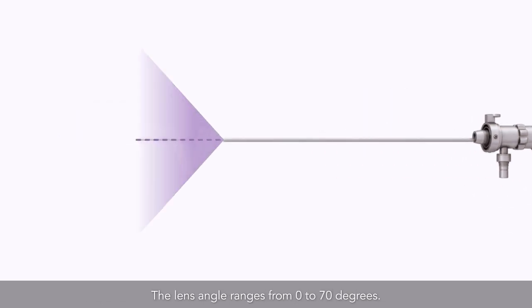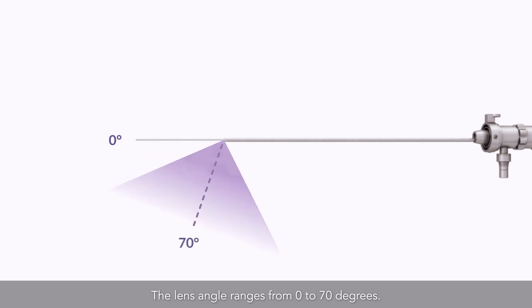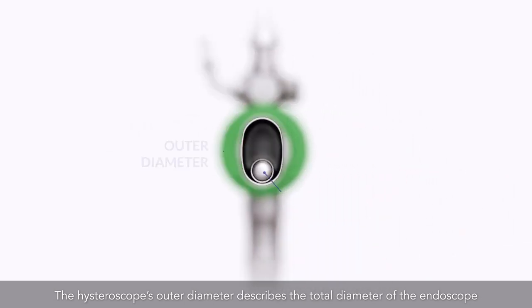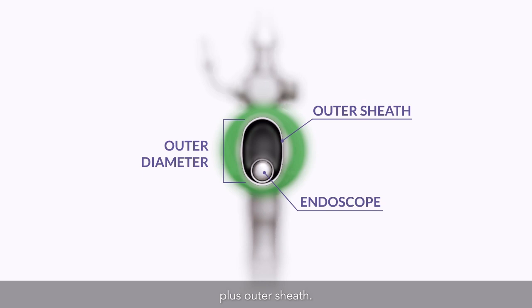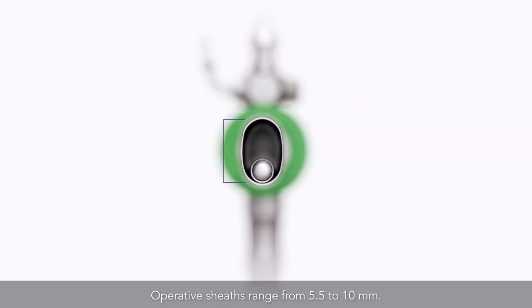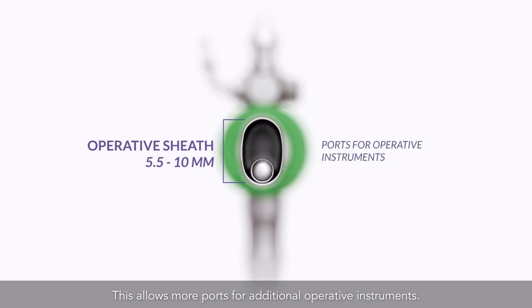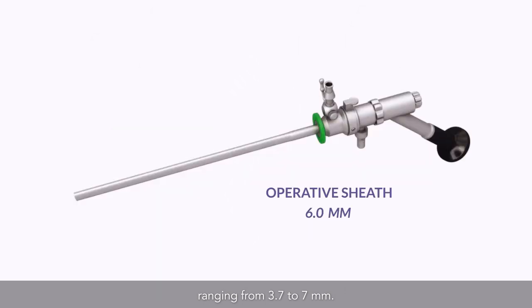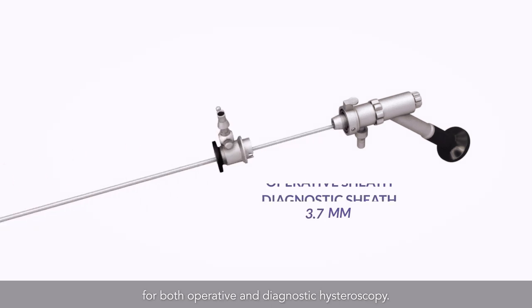The lens angle ranges from 0 to 70 degrees. The hysteroscope's outer diameter describes the total diameter of the endoscope plus outer sheath. Operative sheaths range from 5.5 to 10 mm, allowing more ports for additional operative instruments. Diagnostic sheaths are smaller in diameter, ranging from 3.7 to 7 mm. Some hysteroscopes are able to accommodate a range of sheath sizes for both operative and diagnostic hysteroscopy.